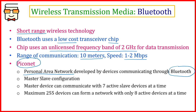A maximum of 255 devices can be connected using Bluetooth technology, but only eight devices — one master and seven slaves — will be active at any given time. The devices can be computers, a car, a mouse, or any other device, but one device acts as the master controlling the others.